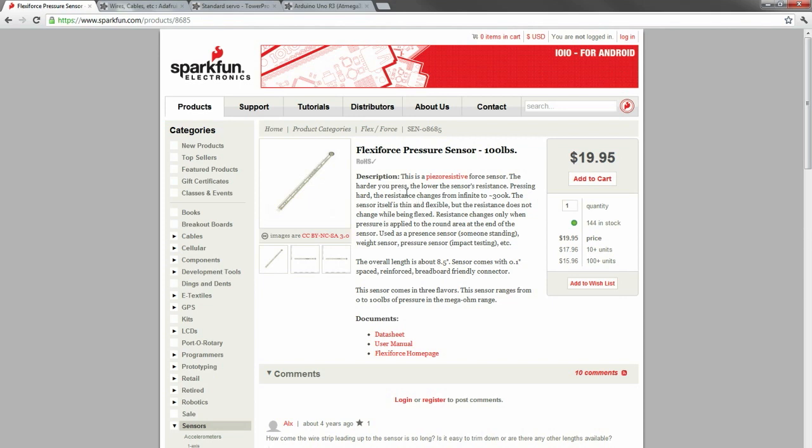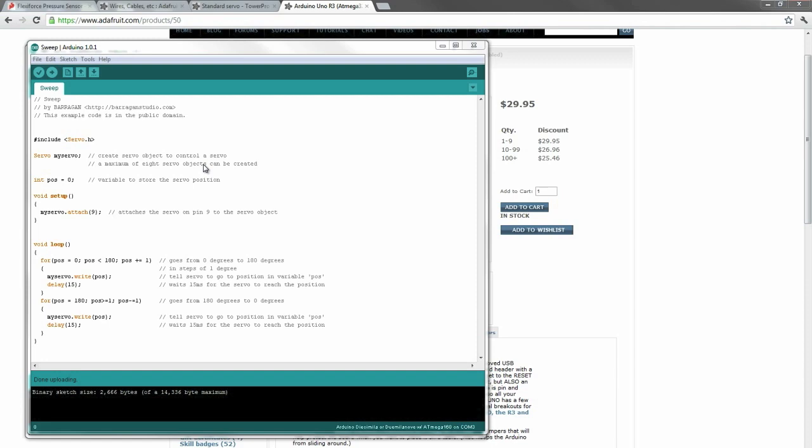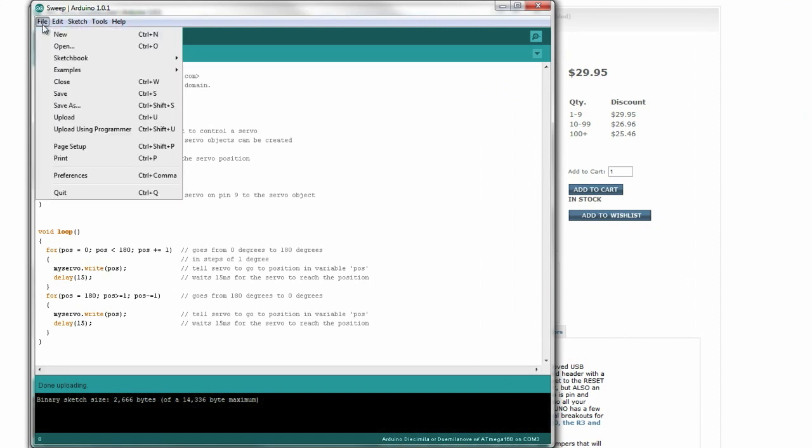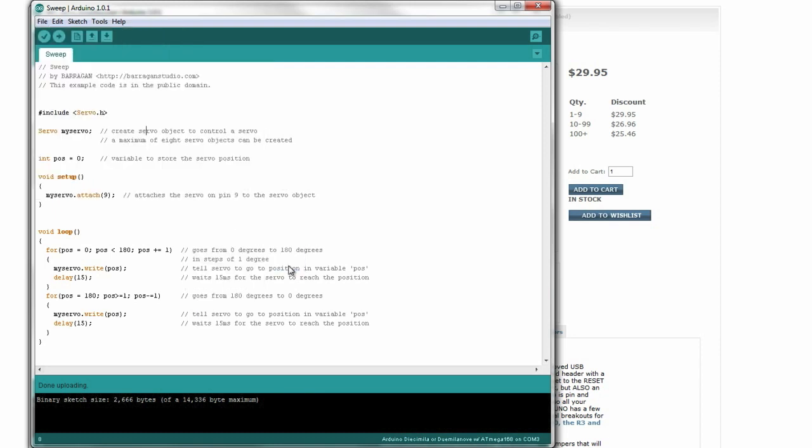We're going to go over two different tutorials today. The first one is the sweep tutorial. Anyone who downloads the Arduino software can get that by going to examples, servo, sweep. We're not going to change the code, but I do want to quickly walk through it. It includes the servo.h, which is a sort of pre-programmed servo library that saves a lot of time and is one of the main features of the Arduino hardware and software platform.